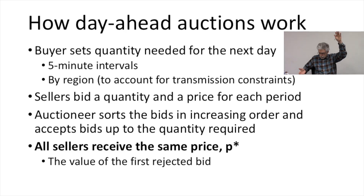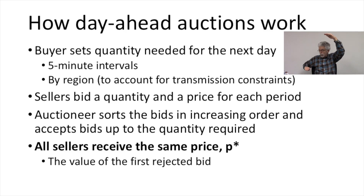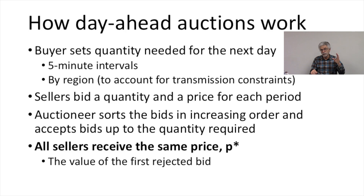The auctioneer sorts the bids from low to high and accepts the low bids up until the amount of electricity needed for that five-minute period. The point where the last bid is accepted or the first bid is rejected sets the price for the auction — that's the uniform price, and all sellers receive that same closing price. That value is the first rejected bid, or sometimes the last accepted bid, and generally those will be the same.